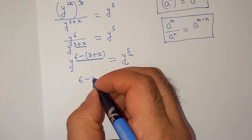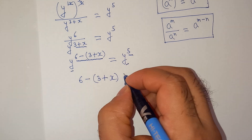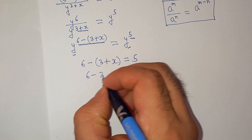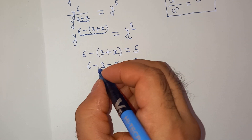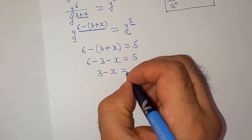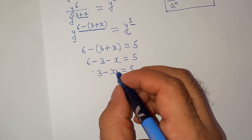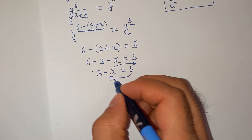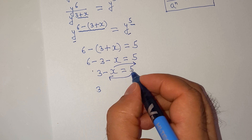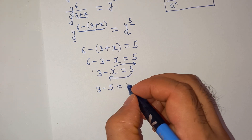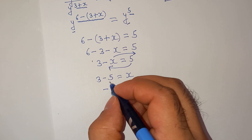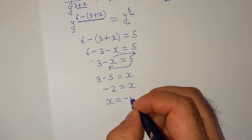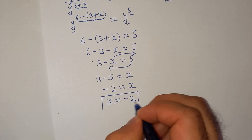So we have 6 minus 3 plus x equals to 5. Opening the bracket: 6 minus 3 minus x equals to 5, which simplifies to 3 minus x equals to 5. Taking minus x to the right side and 5 to the left side: 3 minus 5 equals to x, so x equals minus 2. The value of x is minus 2 — this is our final answer.